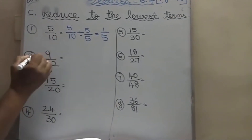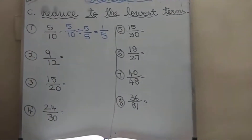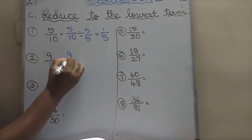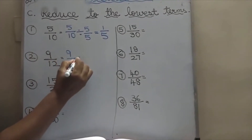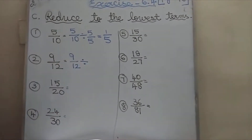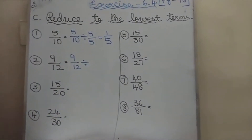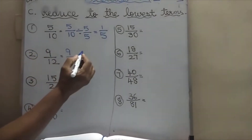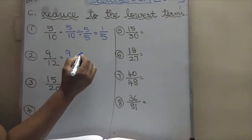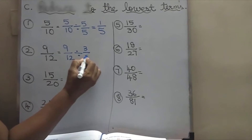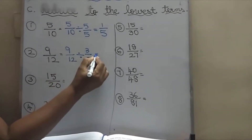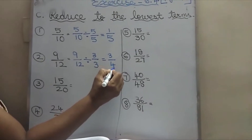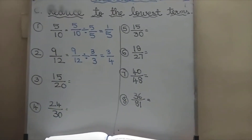Second one: 9 by 12. This both goes in which table? It goes in 3 table: 3 by 3. What answer? 3 3s are 9 and 4 3s are 12. Fractions are very easy.